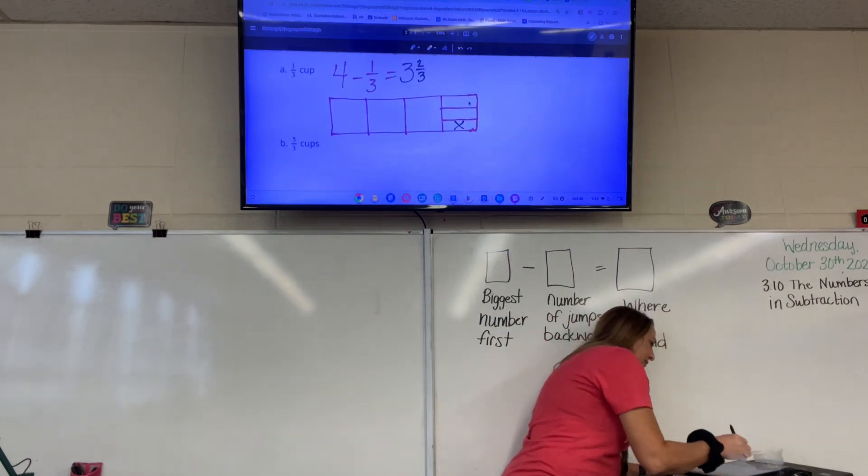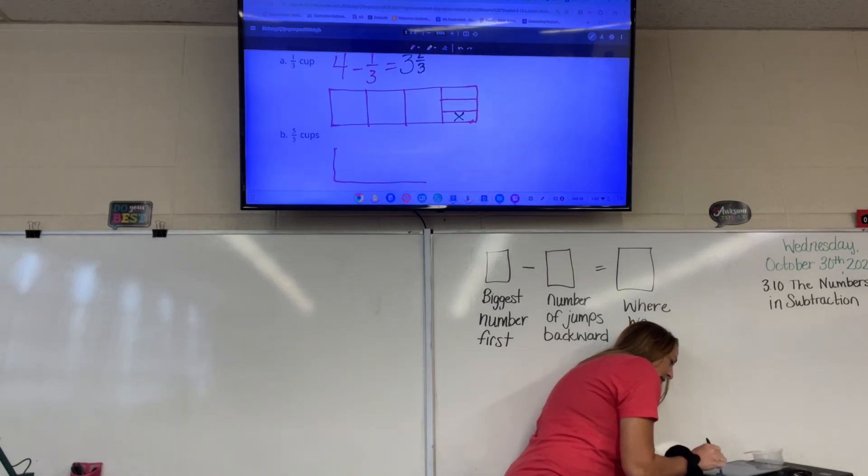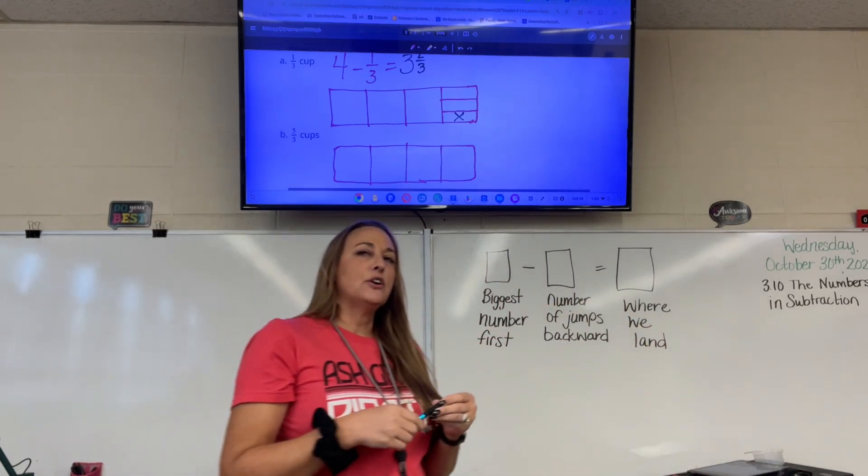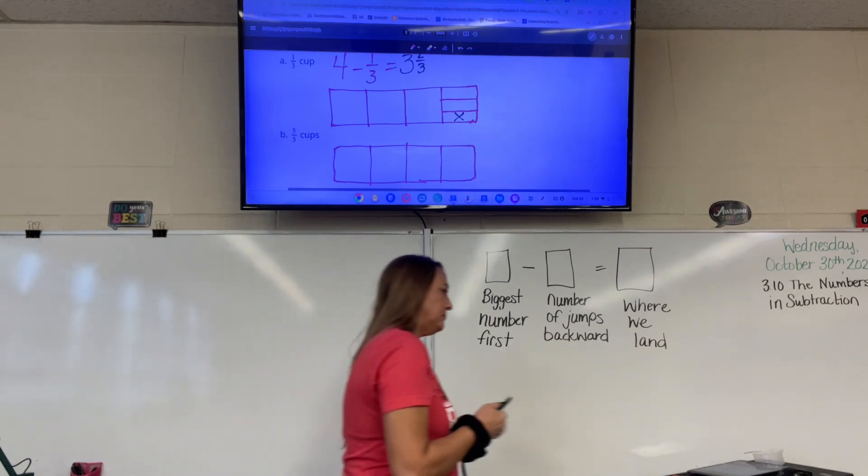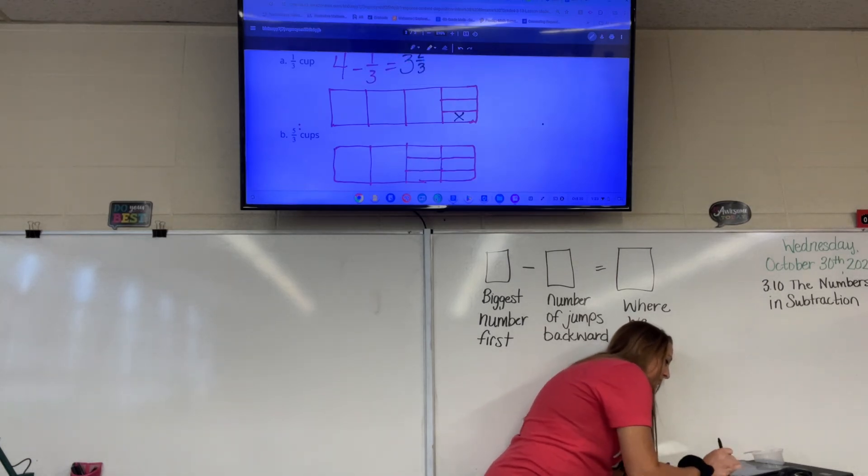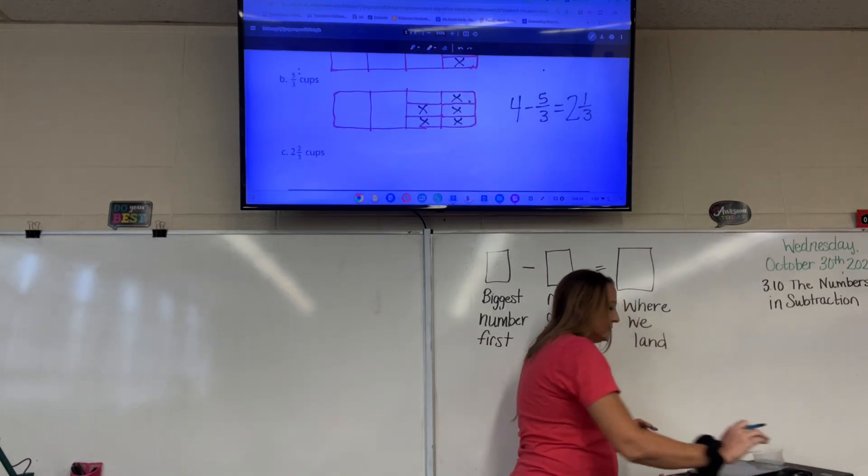On the next one, we're starting with four again, so I need you to draw four squares. And you can use that top model to help you with the sizing. This time I need to take away five thirds. So Fisher, how many wholes do I need to break? Two. Because if I just break one, I'm just going to have three thirds, but I need at least five thirds. So I'm going to break two of the wholes. Now I can start crossing out one third, two thirds, three thirds, four thirds, and five thirds. So the equation four minus five thirds equals two wholes and one third.